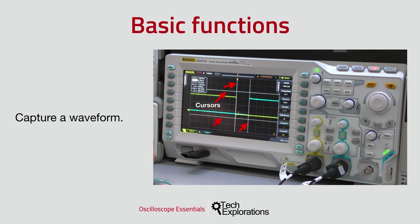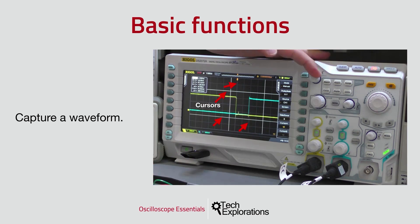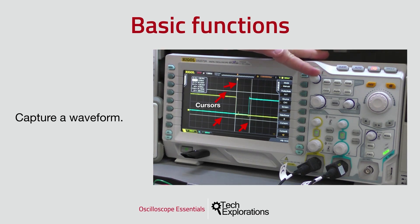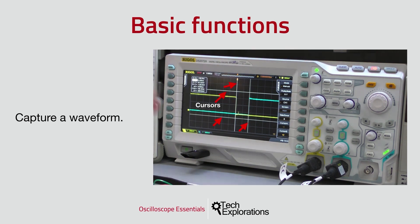In this small example, which comes from one of the experiments later in the course, I've captured a single waveform that was produced by the press of a momentary button. With the waveform captured, I can go ahead and use the cursors to make a measurement. At the top right corner of the oscilloscope, notice the red run-stop button indicating that what I'm looking at is a waveform captured and frozen in time, not a live waveform.